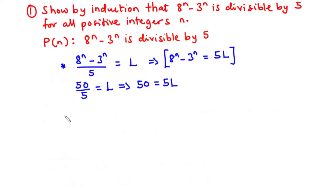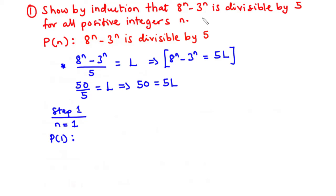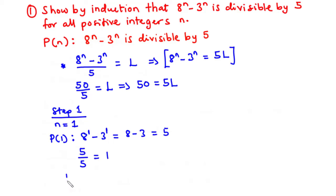Now let's start the induction process. For step 1, the base step, we need to prove the statement is true for the first term, that is when n equals 1. So for n equals 1, we have P(1): 8^1 minus 3^1 equals 8 minus 3 equals 5. Since 5 is divisible by 5, we say that P(1) is true, because 5 divided by 5 gives the integer value 1.